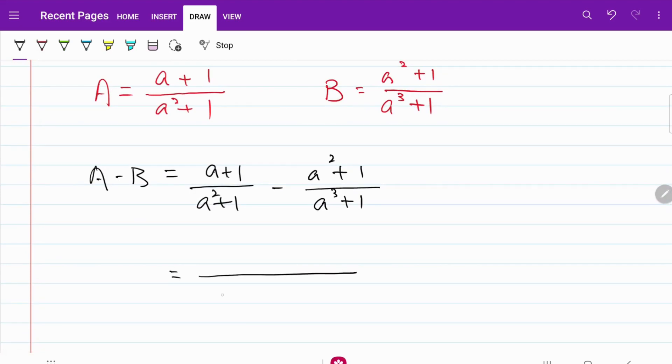First, let's get the common denominator with multiplication. I have a squared plus 1 multiplied by a cubed plus 1.